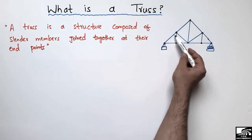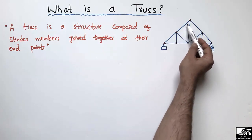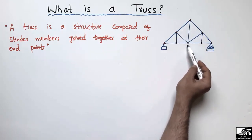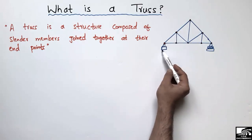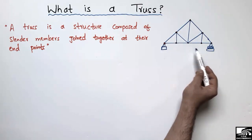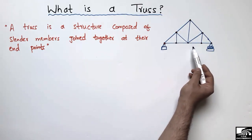You see here, the truss is a combination of different triangles joined together with two supports, though it may have more than two supports.